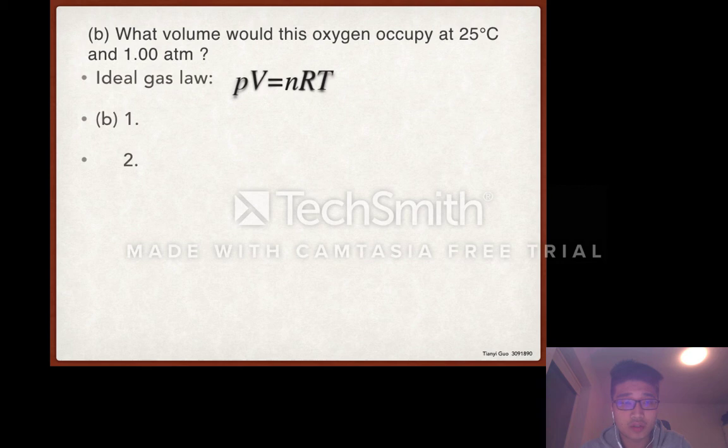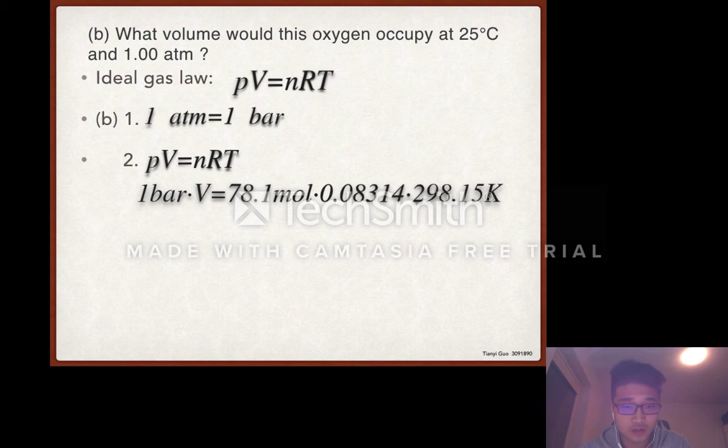The first step we need to know is 1 atm is 1 bar. The second step is the ideal gas law. For this question we have everything. This is the equation. Now we can have the volume. The volume is 1936 liters.